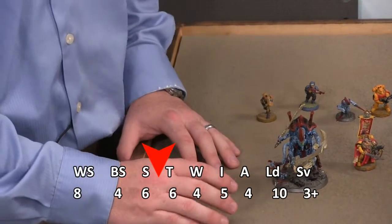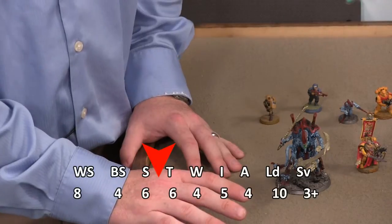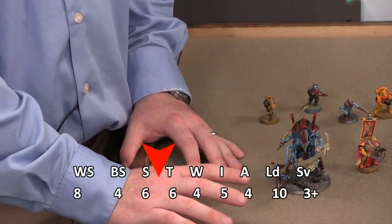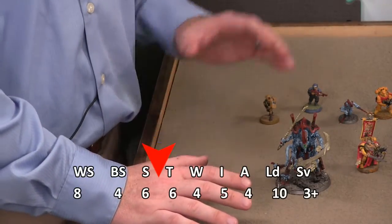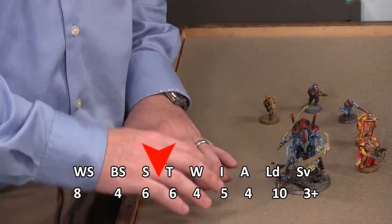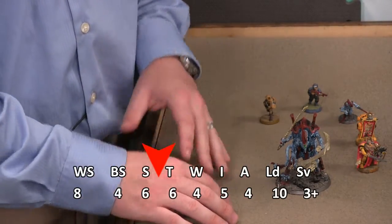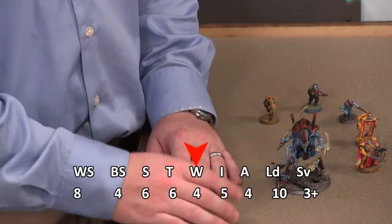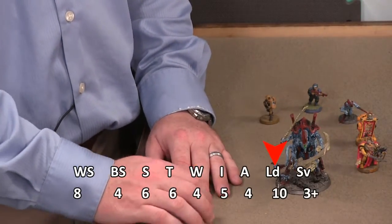Some things I want to point out. He has strength and toughness six. That's huge. Very, very tough. Much harder to kill than a lowly space marine. Strength and toughness six. He also has four wounds. That's the highest we've seen so far. Leadership ten. You can notice that. But take a look at that weapon skill. That's a high weapon skill. He's going to chop through some people pretty easily.